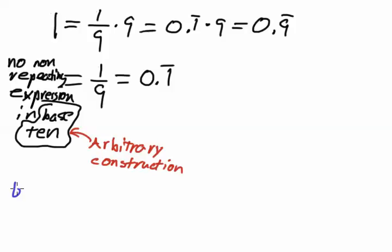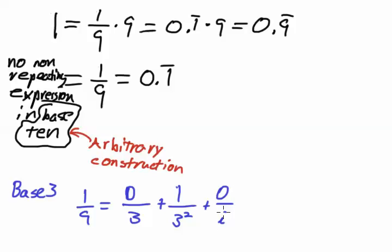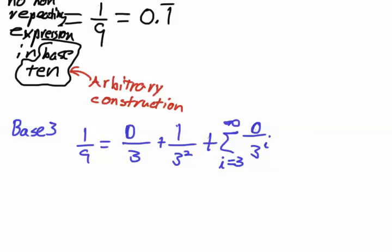But base 10 is a completely arbitrary construction. In base 3, 1 ninth is equal to 0 over 3 plus 1 over 3 squared plus 0 over, well, after that, you got an infinite stream of zeros. So from the third digit on, you would have an infinite stream of zeros.